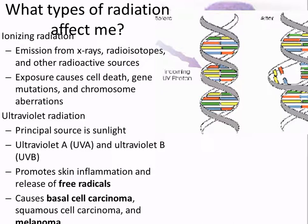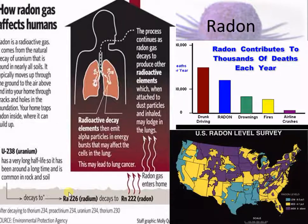Radiation damages cells through UV radiation and X-ray radiation, which cause DNA breaks and promote inflammation. Radiation therapy for cancer works the same way — it changes the DNA of cancer cells and makes them die. When exposed to radiation, the DNA breaks and doesn't repair properly, leading to mutations. The national radon death toll is higher than drunk driving deaths, drowning, fires, and airplane crashes combined.